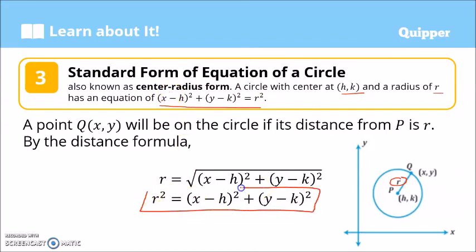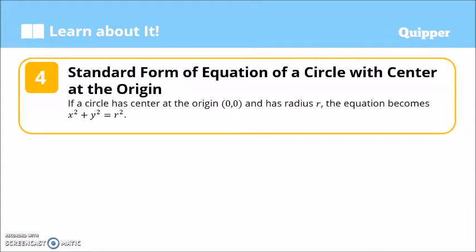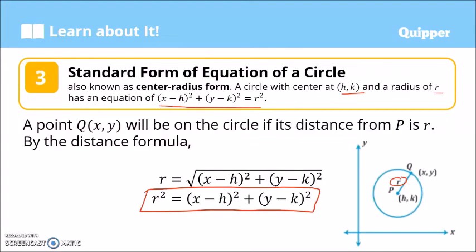So again, to remember: the standard form of the equation of the circle is also called the center-radius form because we only need the center and the radius to generate it. For a circle with center at the origin — coordinates (0, 0) — the equation simplifies because h = 0 and k = 0.